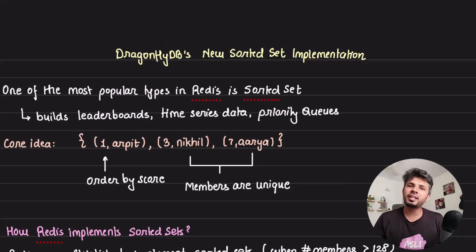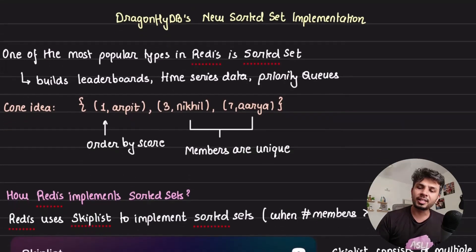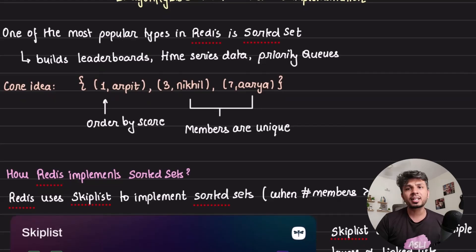This is the third video in the series. Let's start with understanding how Redis implements sorted sets. Sorted set is one of the most widely used data structures in Redis, used in building leaderboards or anywhere you need priority queues.